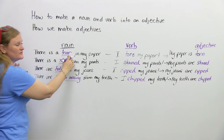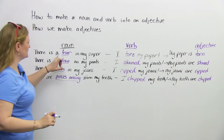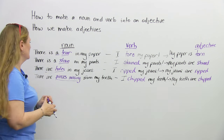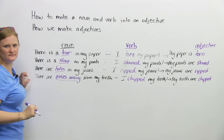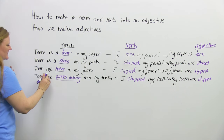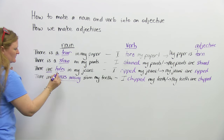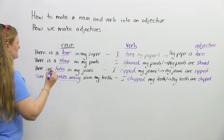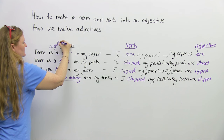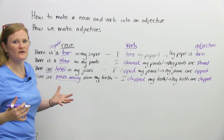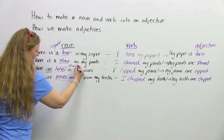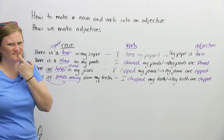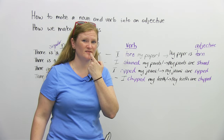We're going to know that this word is a noun with some very simple tricks — because we have the word 'a' as an article, so 'there is a tear in my paper.' We know that this is a noun. The next one: 'There is a stain on my pants.' And the next one: 'There are holes in my jeans.' We have to use 'are' because holes are plural — we can't say 'there is a hole' because 'a' is only for singular. When we have plural, for example holes or pieces, we have to use 'are.' And 'there are pieces missing from my teeth' — true story, I have pieces missing from my teeth.